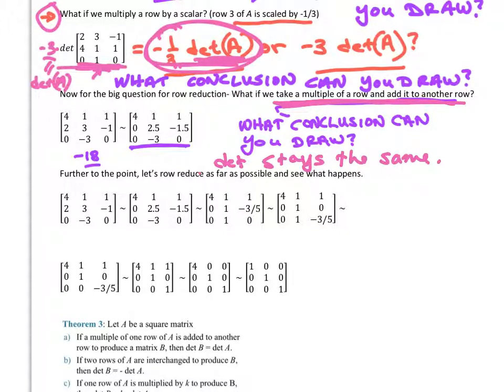Further to the point, let's row reduce as far as possible and see what happens. So here's my A. So I'm going to do row reduction and figure out what my determinant ends up being. So if you notice from going from here to here, I'm going to multiply row one by negative one-half and add it to row two. So when I do that, I'm taking a multiple of a row and adding it to another row. So that doesn't change anything. So we're still at the same determinant.